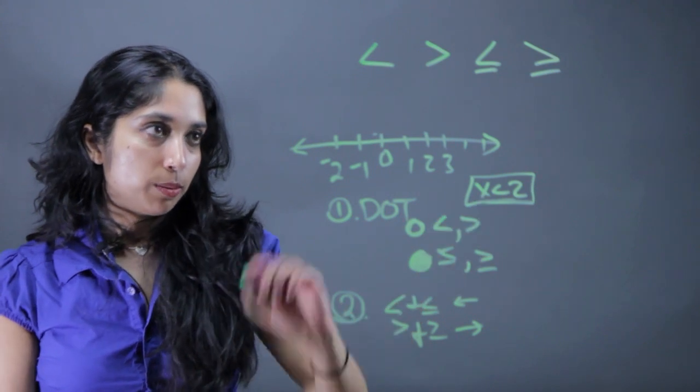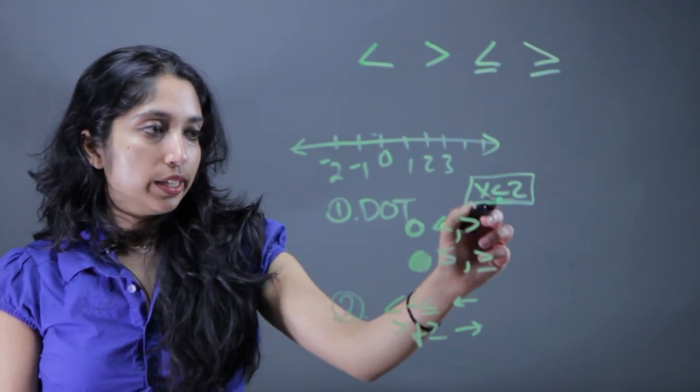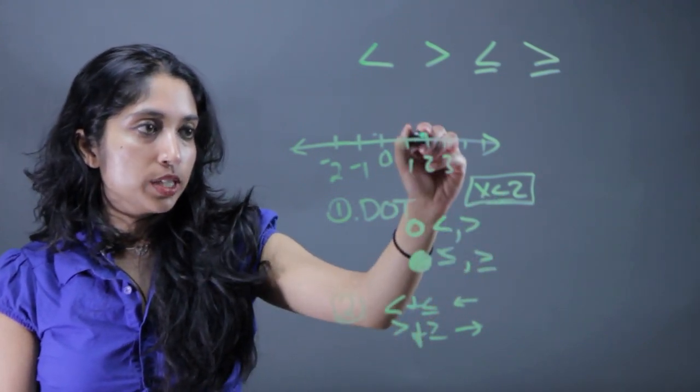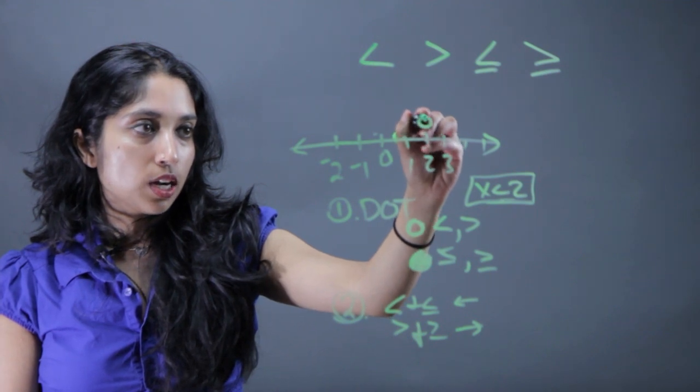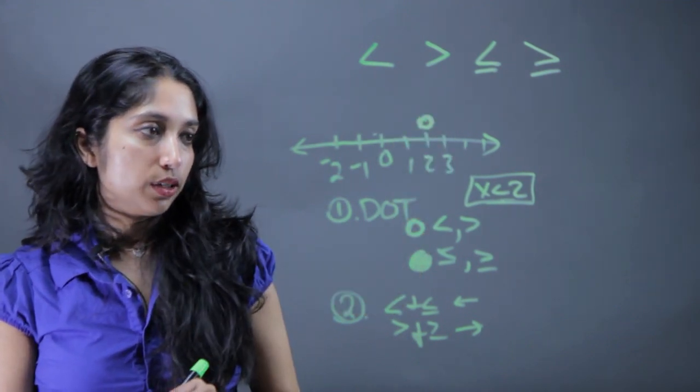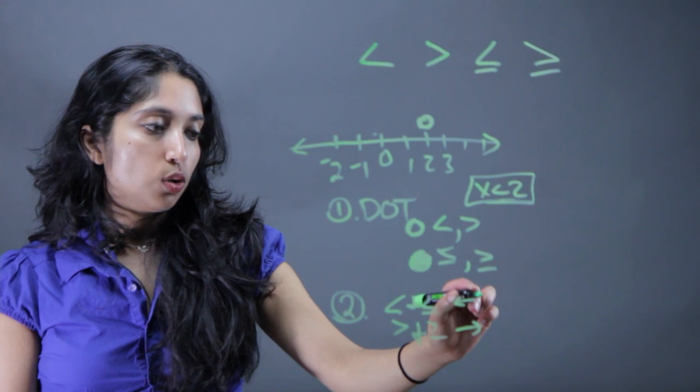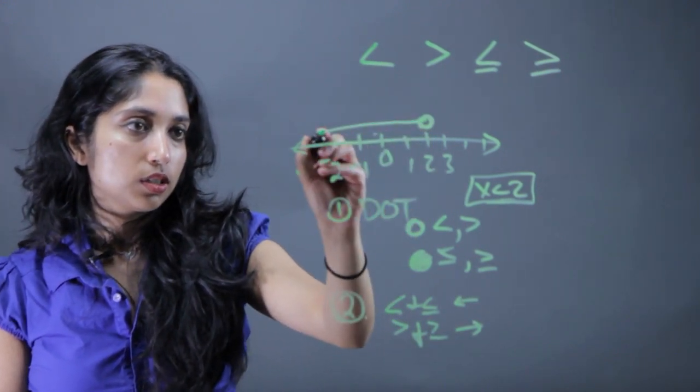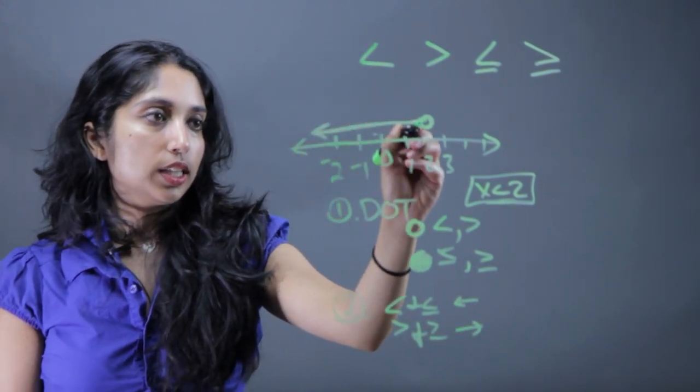Let's take our example problem: x is less than 2. Since it's less than, it's going to be an open dot. We go to 2, put on that open dot not including that value, and since it's less than, it moves to the left.